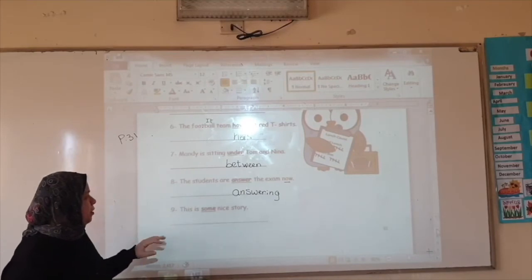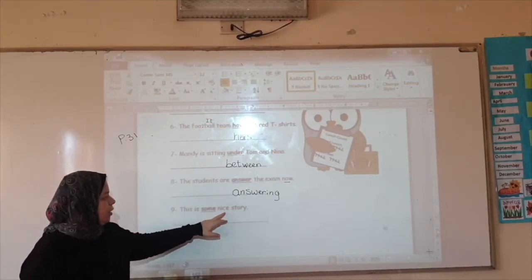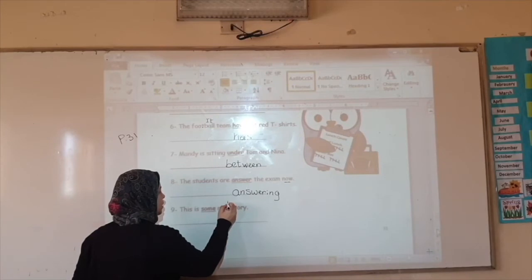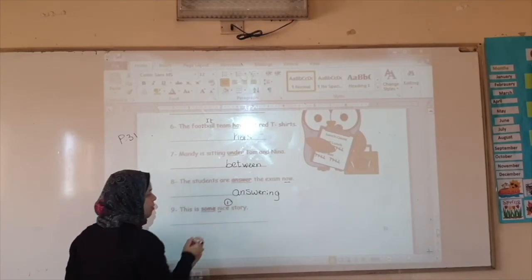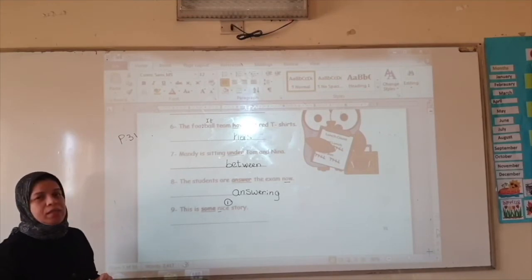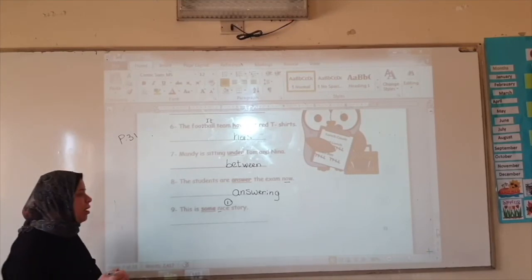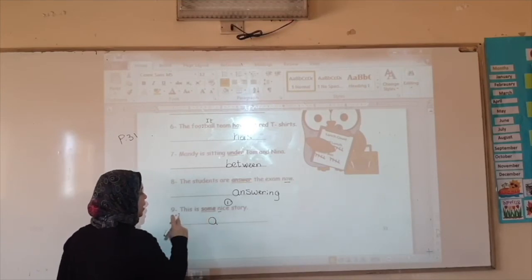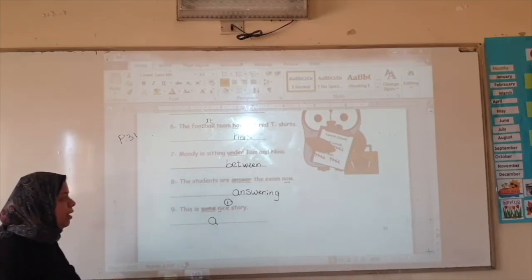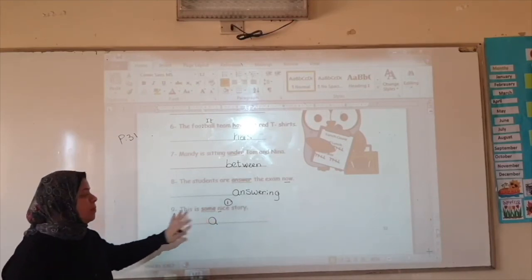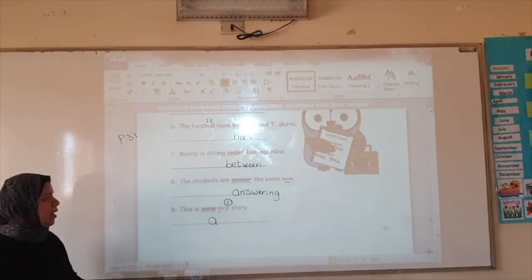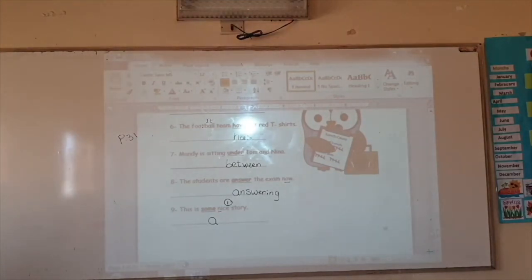Number nine. This is some nice story. Do I have one crazy story? I only have one. And what do I have here? Nice. Is it five, one of the five thousand? No. So I'm going to use A. So I'm saying this is a nice story. If I have the word stories, I will keep some as it is. But I only have one. When I have one, I will go to A or An.